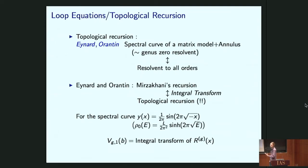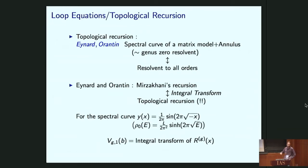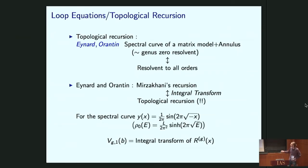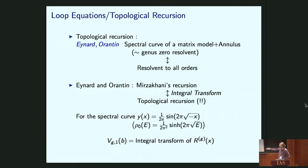What topological recursion tells us is that given the spectral curve of the matrix model — essentially the genus-0 resolvent plus an annulus contribution — we can run the recursion and calculate the resolvent to all orders in the genus expansion. Eynard and Orantin showed that Mirzakhani's recursion relations are equivalent to a special case of topological recursion. If we give the spectral curve sinh(sqrt(−x)) — meaning our matrix integral has genus-0 density of states sinh(sqrt(E)) — the topological recursion relations are identical to Mirzakhani's. Specifically, an integral transform of the genus-G resolvent equals the genus-G Weil-Petersson volume.